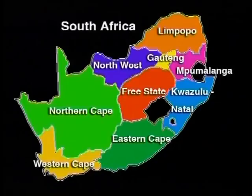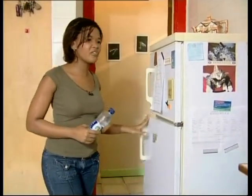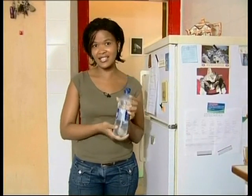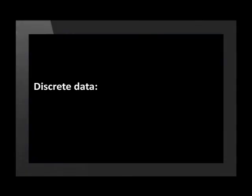Here's another example. How many provinces are there in South Africa? I'm sure you know there are nine. But could there ever be nine and a bit provinces? Well, the government could make another province I suppose, but that would be ten provinces, not nine and a bit. So variables like people, provinces, and even water bottles like this one, have to be counted in whole numbers.